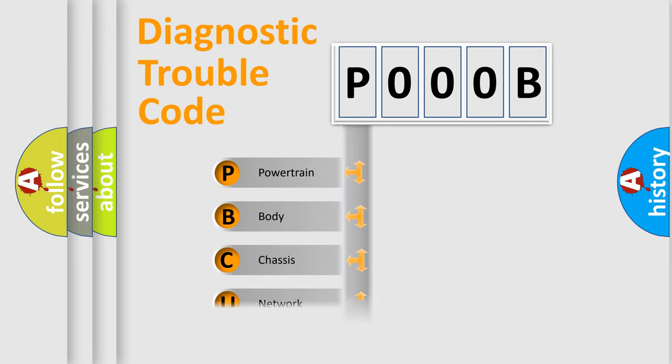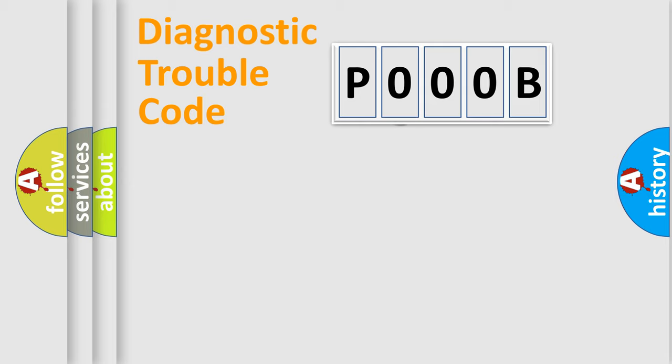Powertrain, Body, Chassis, Network. This distribution is defined in the first character code.